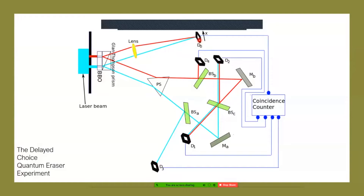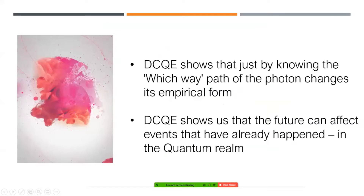The entangled photons are sent in different ways to five detectors. These detectors show either an interference pattern, which means it behaved as a wave, or a clump pattern — two vertical lines — which means the photon arrived as a particle. By sending the photon as an entangled pair, one way and one another, we can do this amazing experiment.